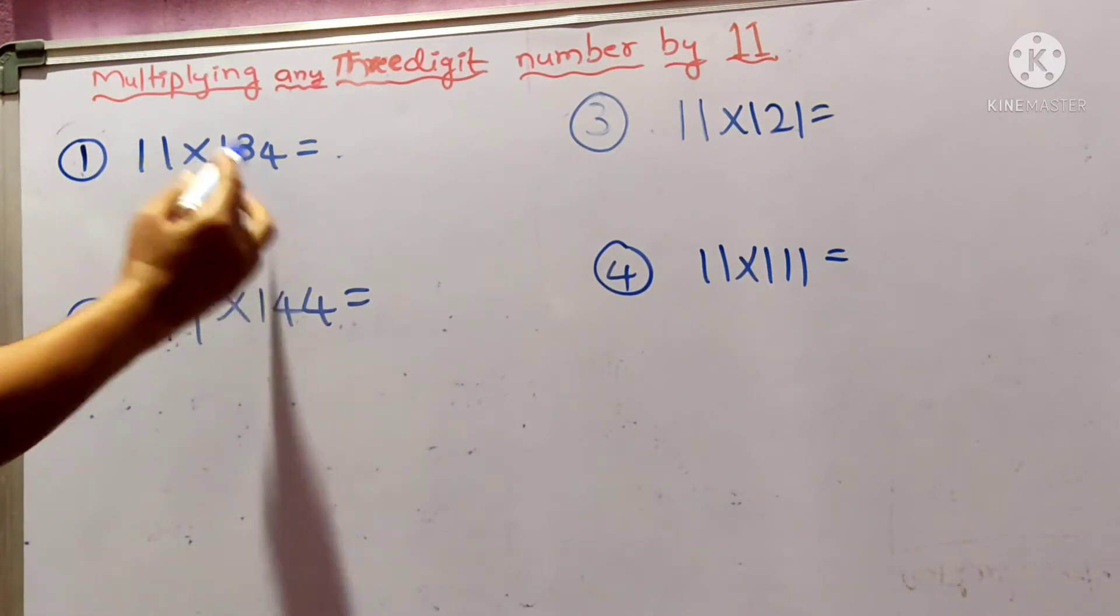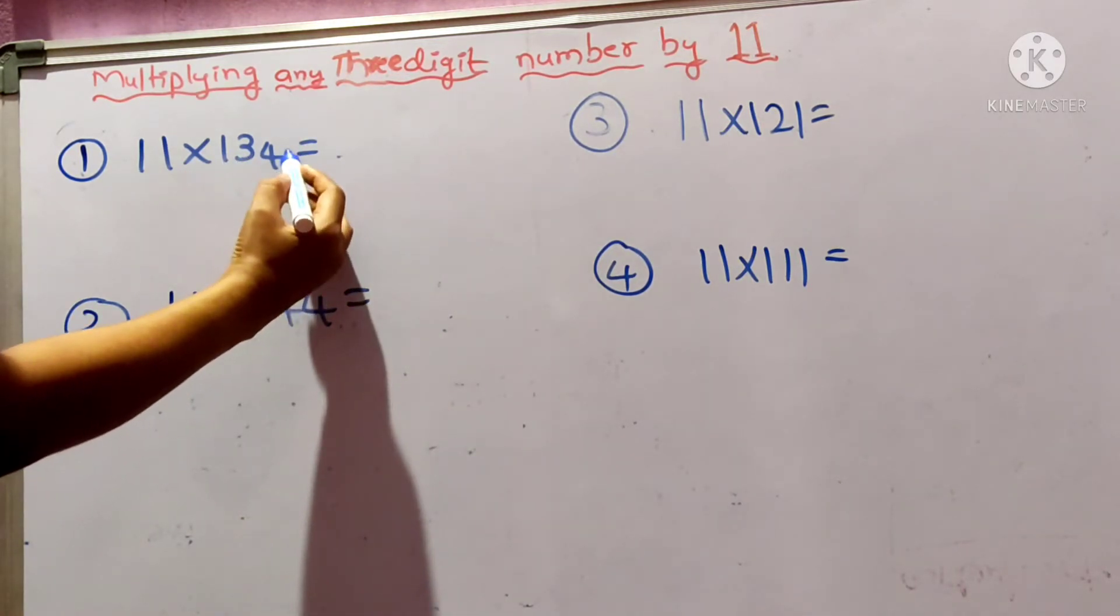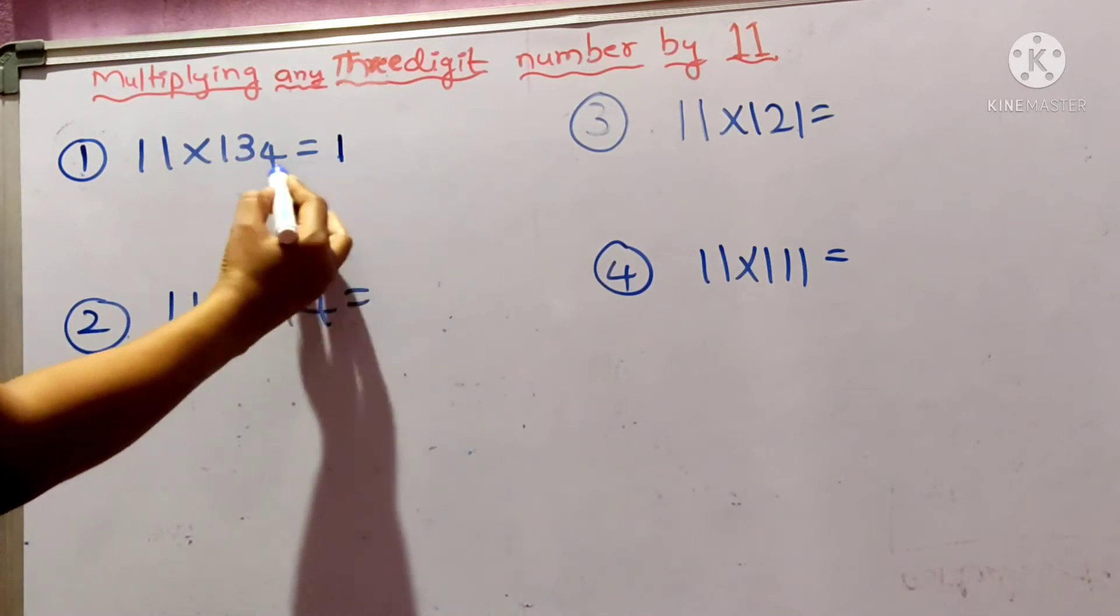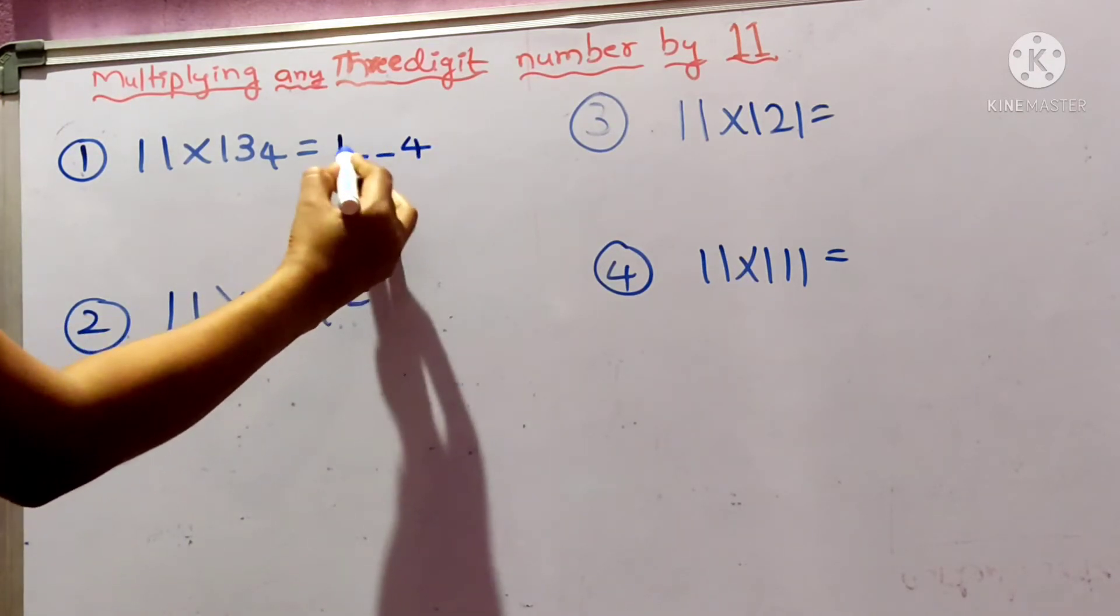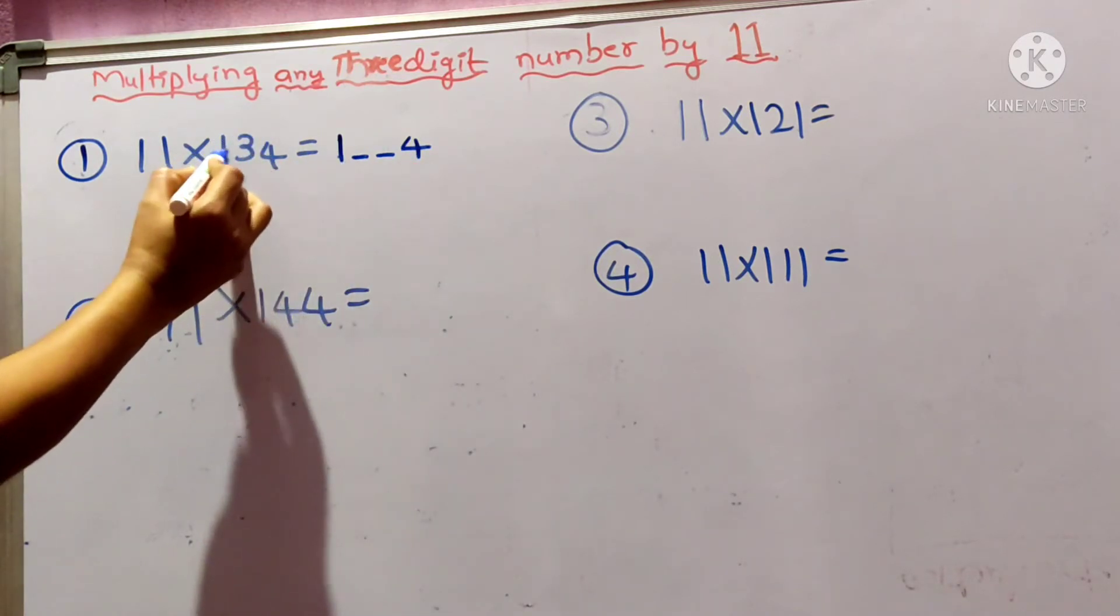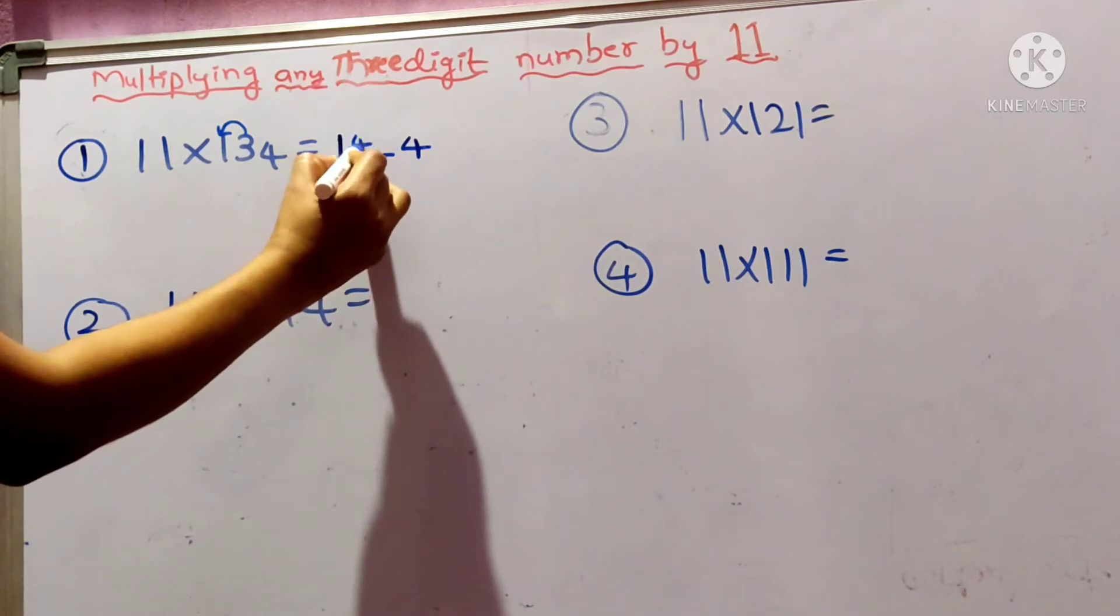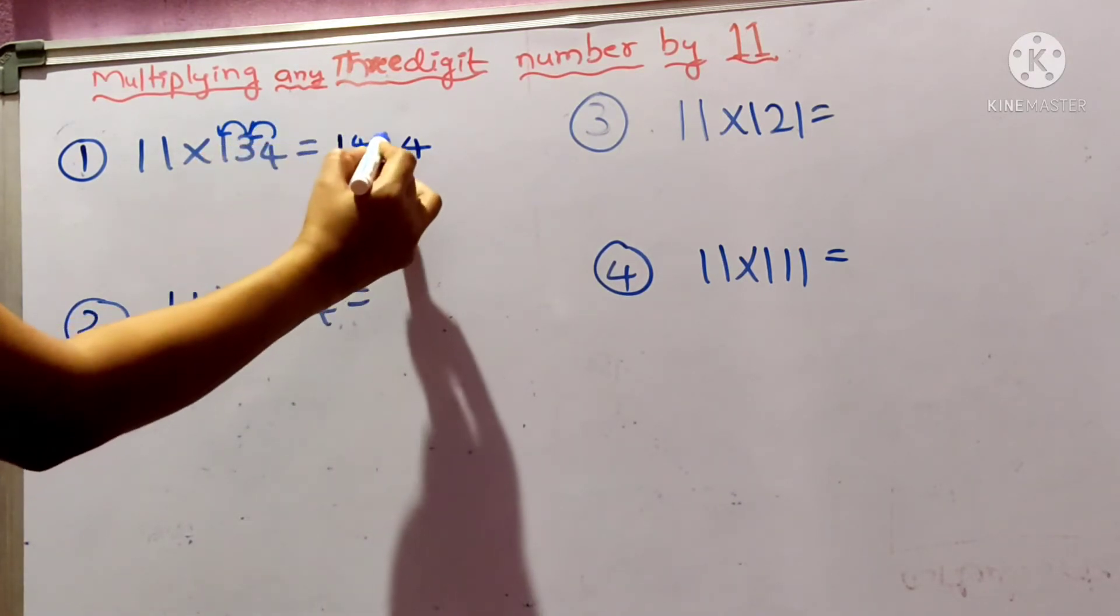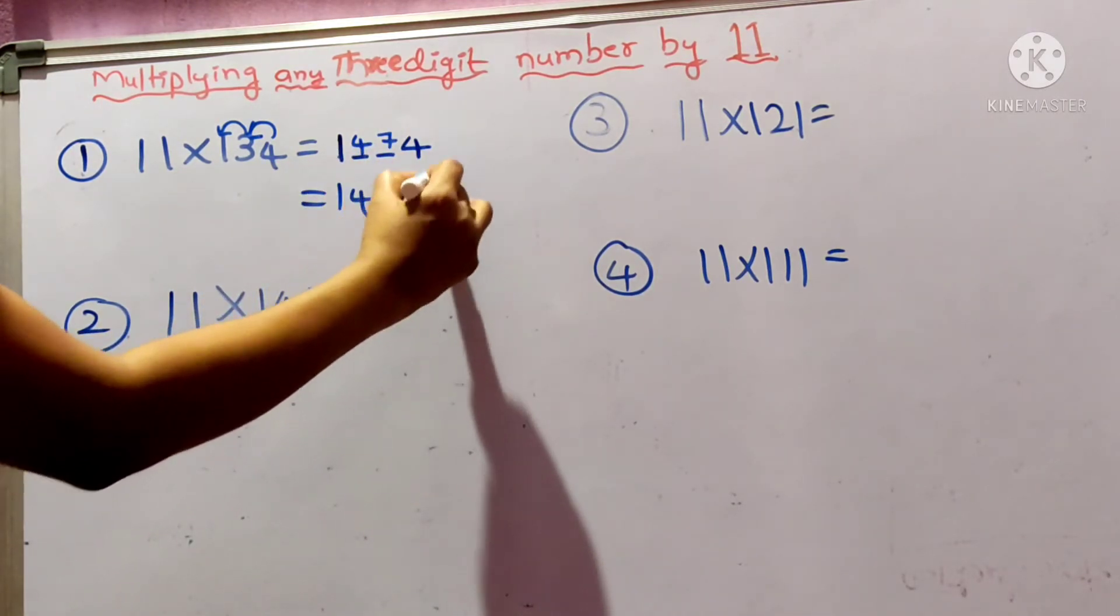First question, 11×134. For that, in 134, the first number is 1, keep it as is. Next, the last number is 4. Now keep two spaces in between these two. In 134, 3+1 is how much? 4, write here. 4+3 is how much? 7, write here. Now the answer is 1474.